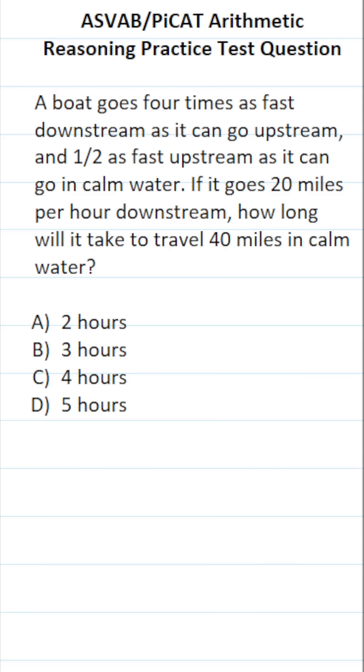This final statement, how long, is in reference to T or time. It will take to travel a distance—40 miles is a distance in calm water. So we're going to need the distance formula to solve this one. That is, distance equals rate times time.